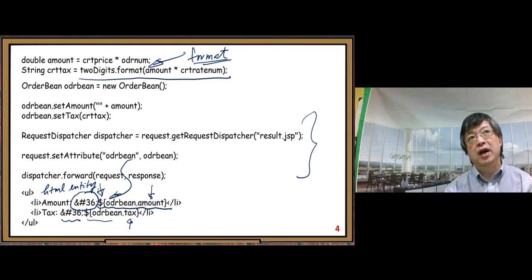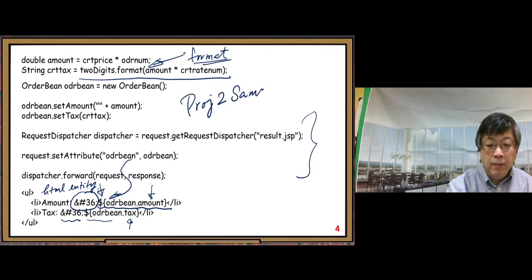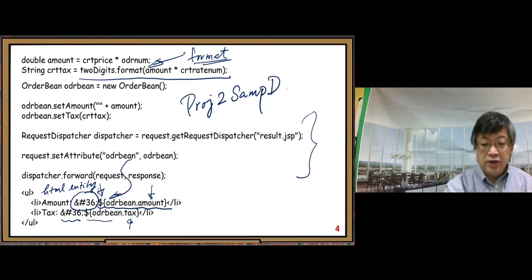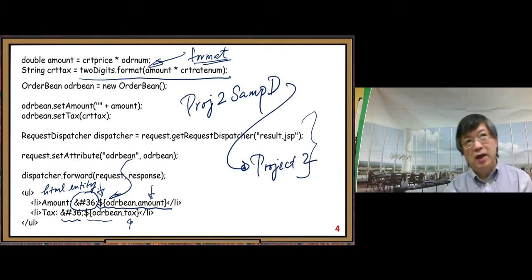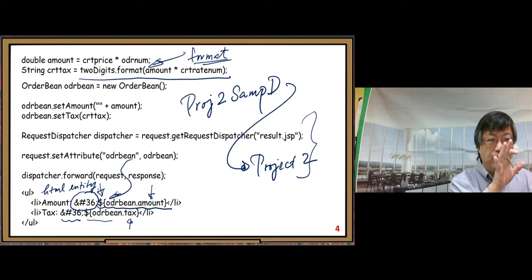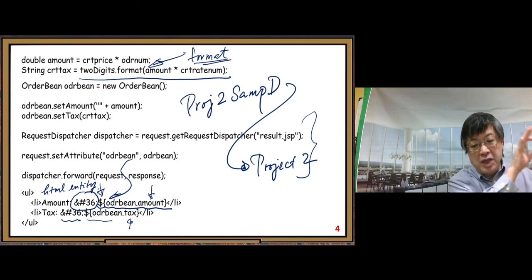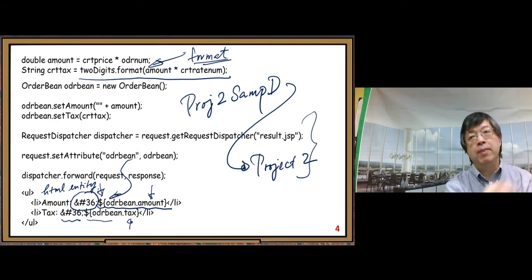Now we just run it. This project 2 sample D is very close to our final project 2, with only two features missing. In my next video I will show you how to go from project 2 sample D to the final project 2, fixing the gap.